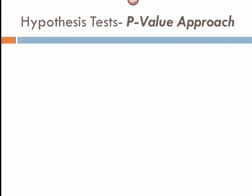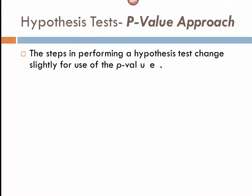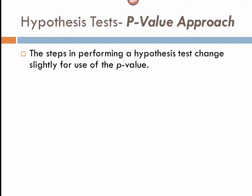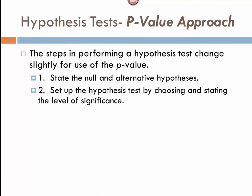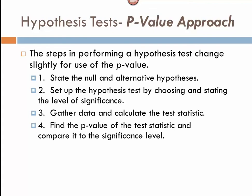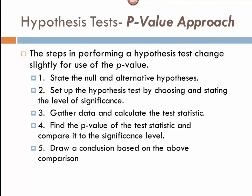When we do the p-value approach, the steps are basically the same as the critical value approach, with slight differences. We first state the null and alternative hypothesis, then choose and state our level of significance. Then we gather data and calculate the test statistic. Once we've found the test statistic, we compare the resulting p-value — the probability value — to the significance level to draw a conclusion. You may want to review the theory behind the p-value in Section 12.1.